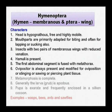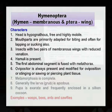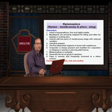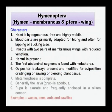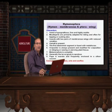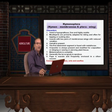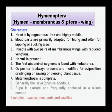The ovipositor, which is an egg-laying apparatus, is very much present and is modified for the purpose of laying eggs. In some species, stinging, sawing, or piercing-like organs are also developed on the abdomen. Metamorphosis is complete, meaning all four stages — egg, larva, pupa, and adult — can be seen, and the changes are very easily observable across the different stages of the life cycle.